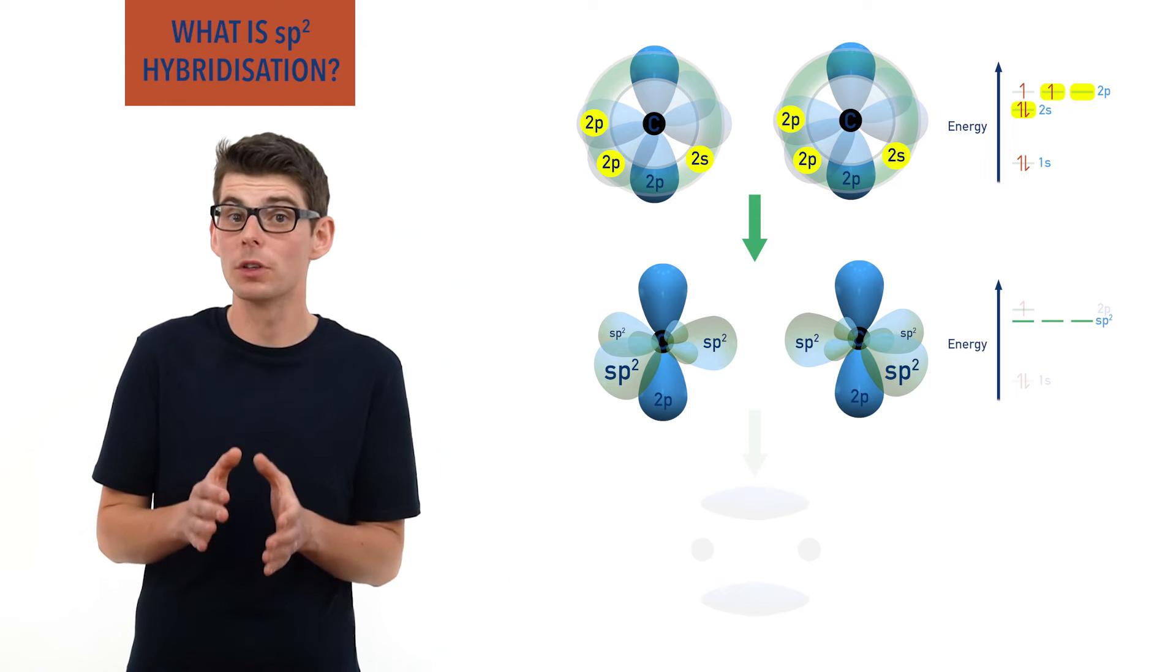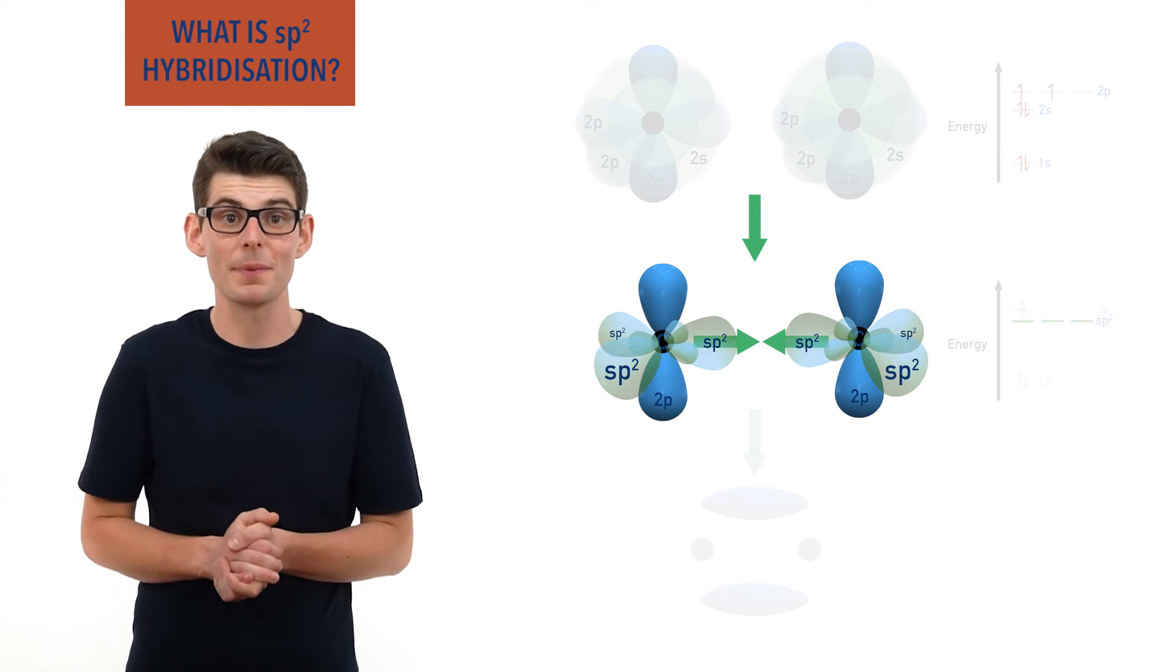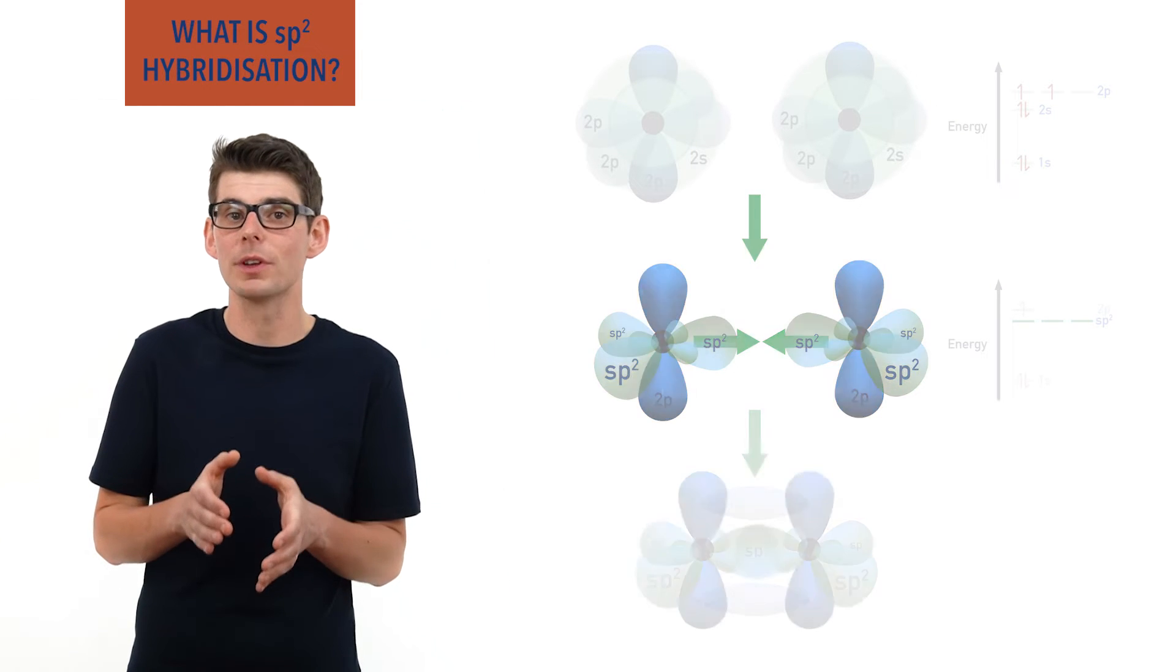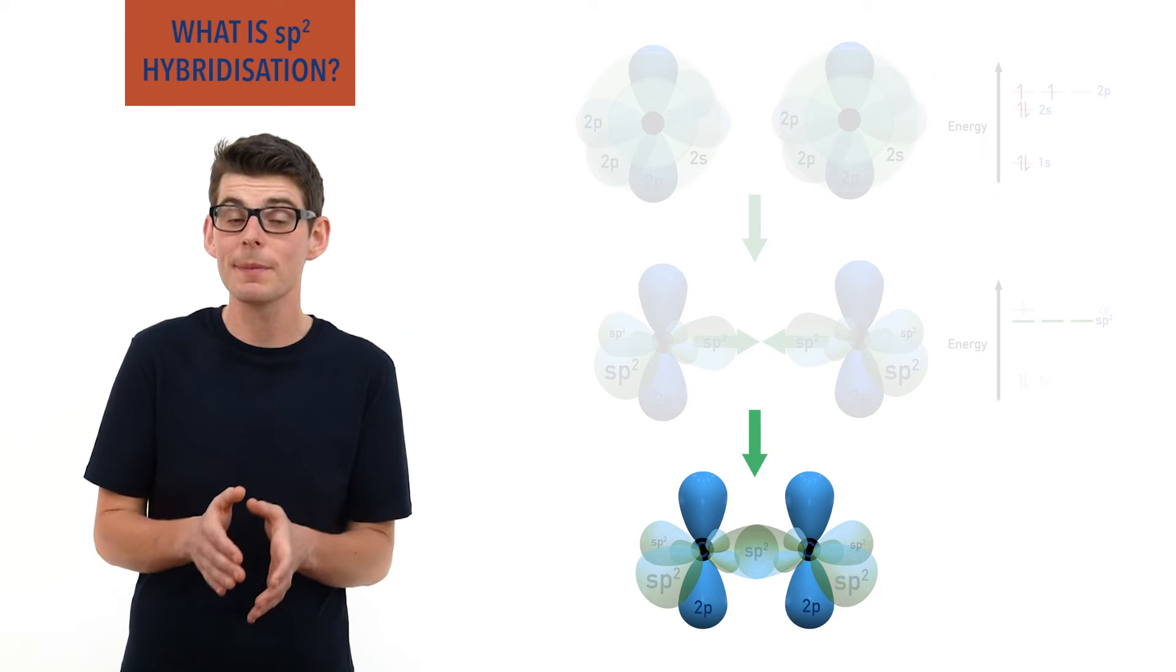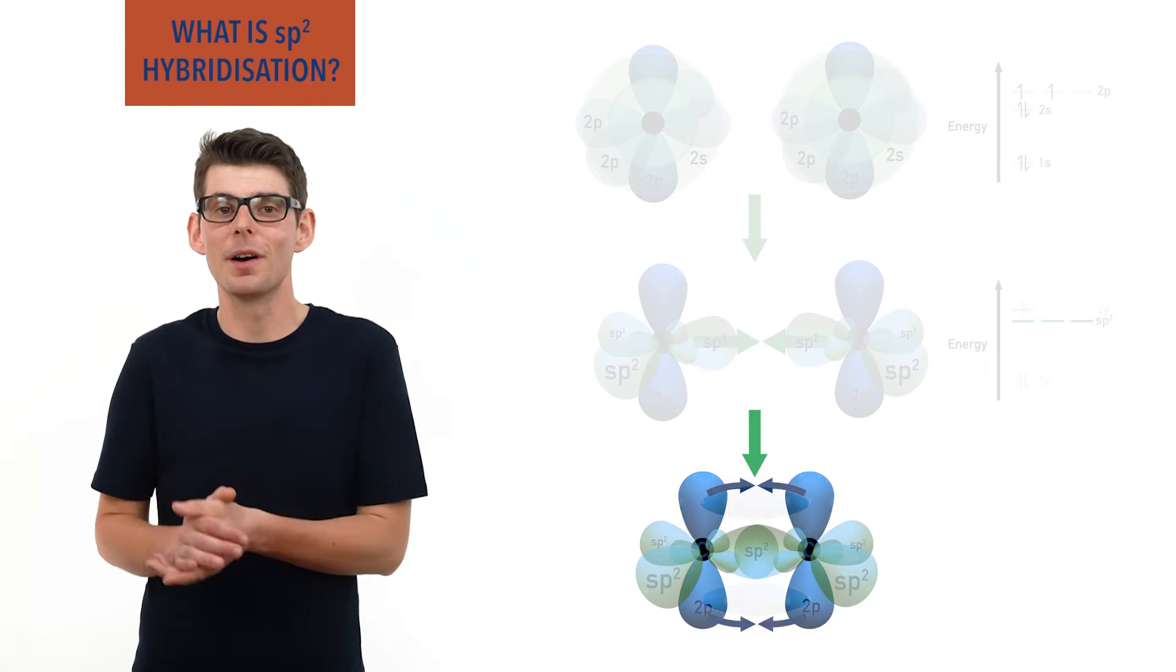Now as a sigma bond forms between the two sp2 hybrid orbitals from two different carbon atoms, the unhybridized half-filled p orbitals on each atom can overlap sideways with each other, forming a pi bond.